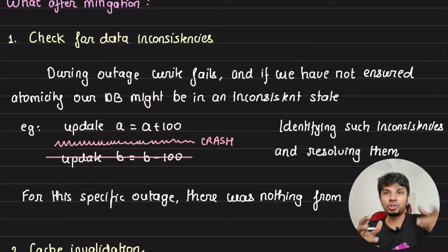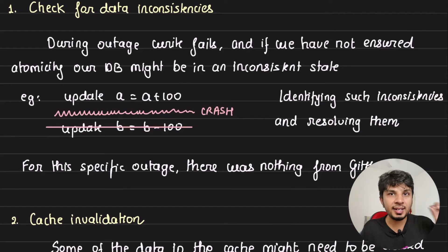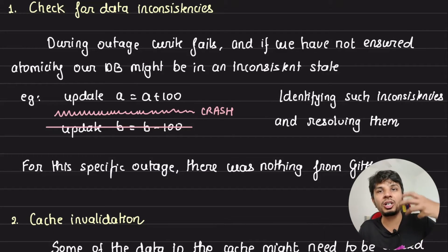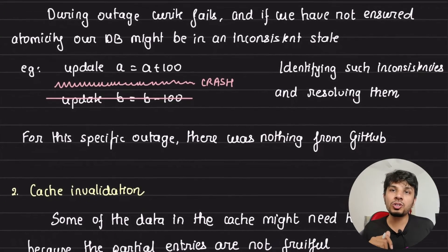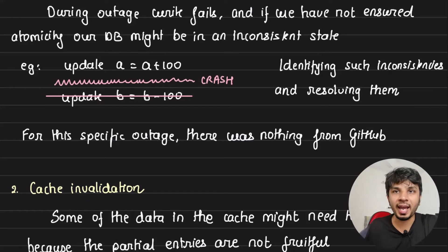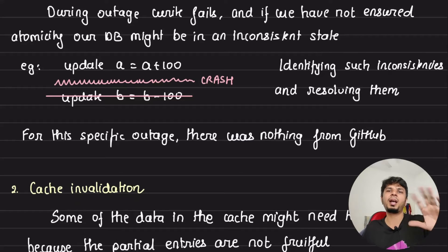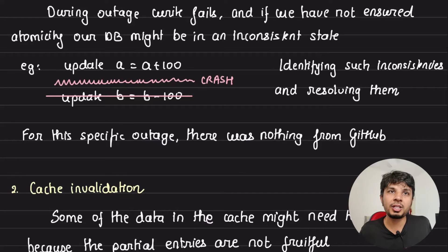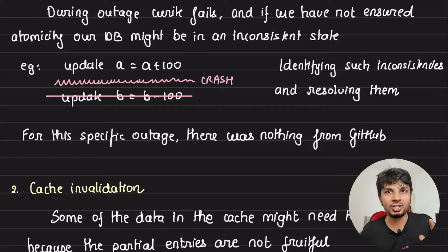So after an outage, you should check for data inconsistencies. Understand the system really well, identify where inconsistencies might exist, and ensure those are cleared. GitHub did something similar by removing invalid tokens from the cache that were no longer needed. Whenever you have an outage, after mitigation, ensure your data is not left in an inconsistent state — because it might lead to an irrecoverable situation that should never happen.